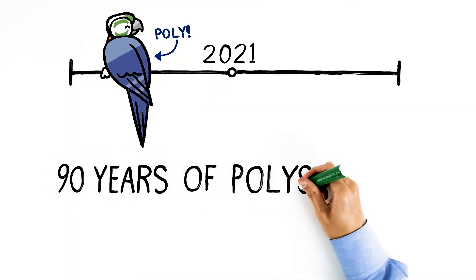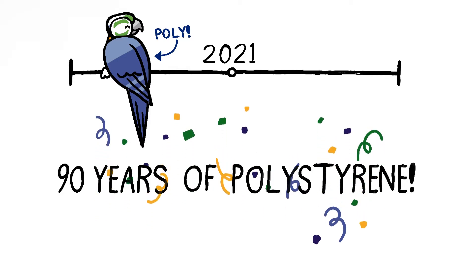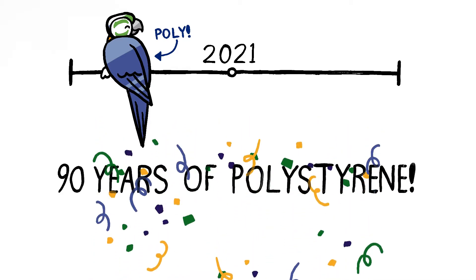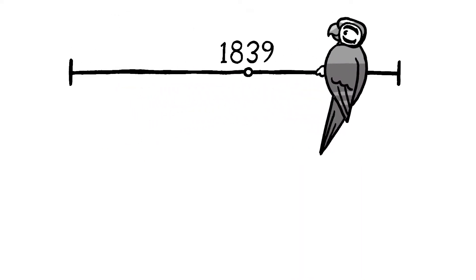2021 marks the 90th year since the invention of the first ready-to-use polystyrene. This material, so indispensable to our modern way of life, may seem like a recent invention, but its beginnings trace all the way back to the 1830s.